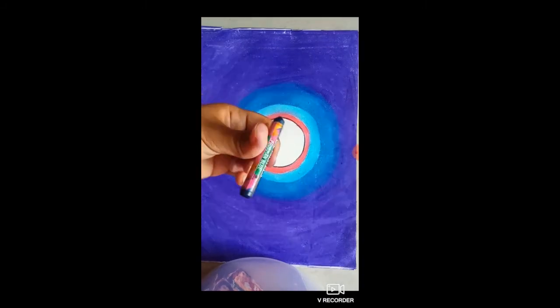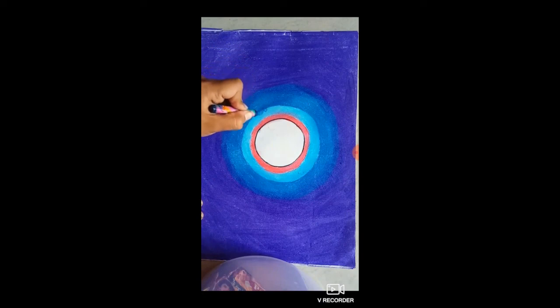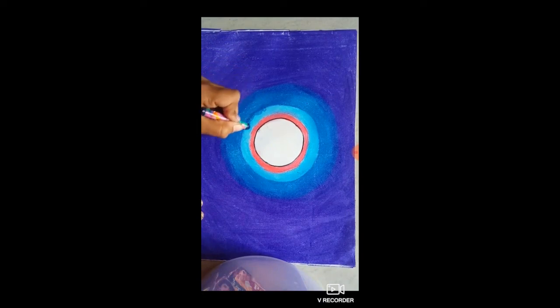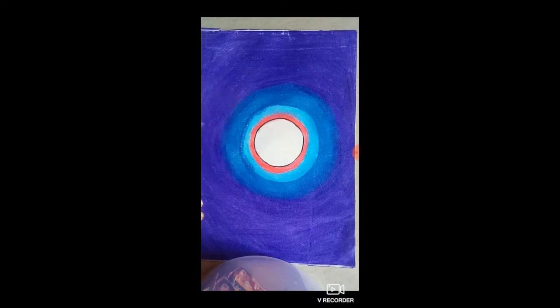After that, take the Prussian or Persian blue and do the same thing, but the circles should be small over here, or the spring structure should be small, and then again smoothen that out.